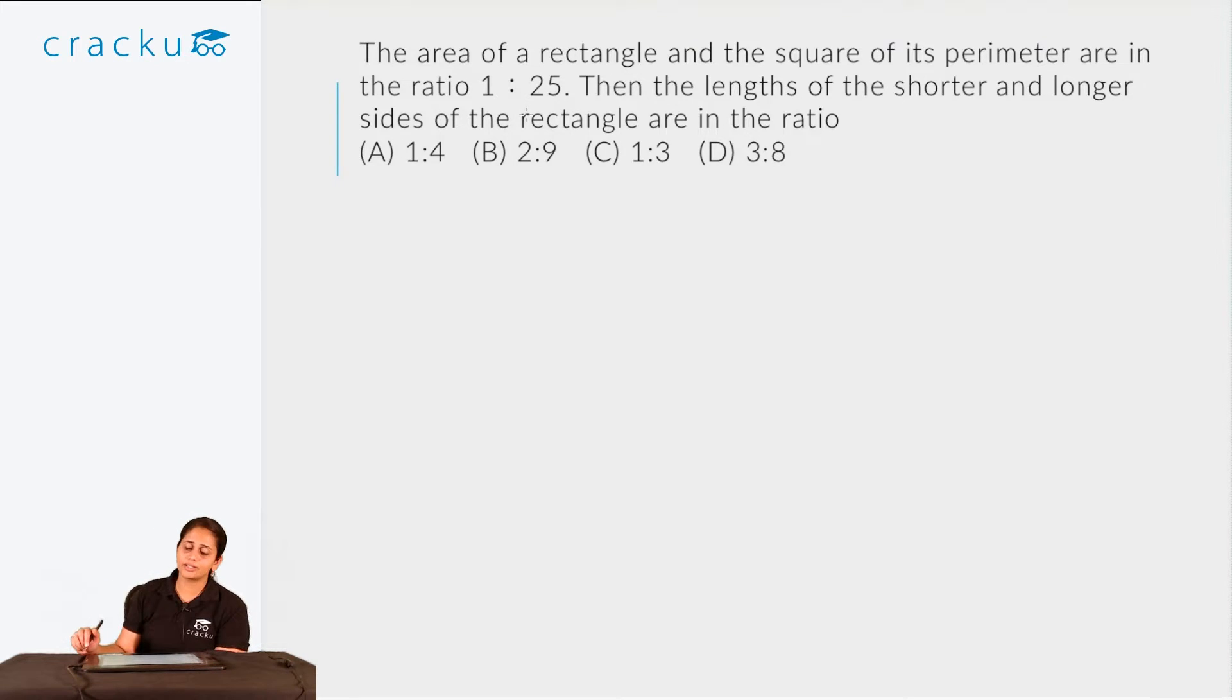Now let us take a look at another question from quadrilaterals. The area of a rectangle and the square of its perimeter are in the ratio 1 is to 25. Then the lengths of the shorter and longer sides of the rectangle are in the ratio. So let us first try to figure out the rectangle. Let us say one of the longer sides is A and the shorter side is B, so I am saying that A is greater than B.